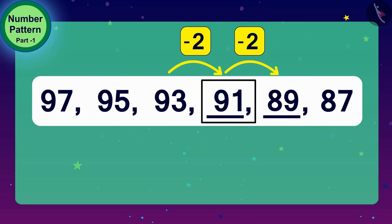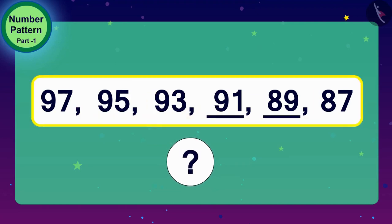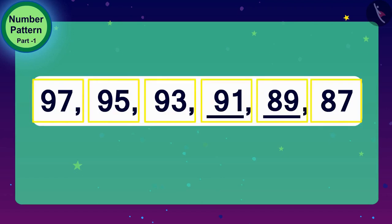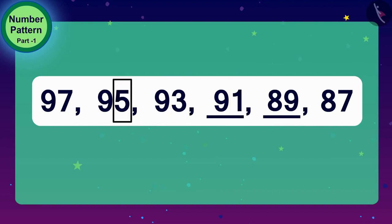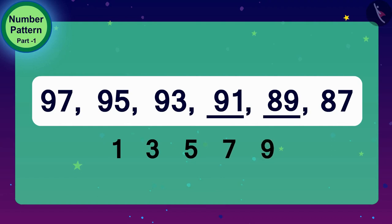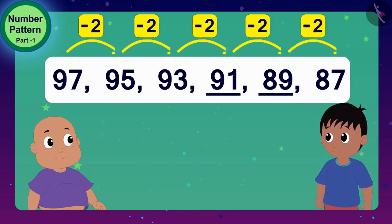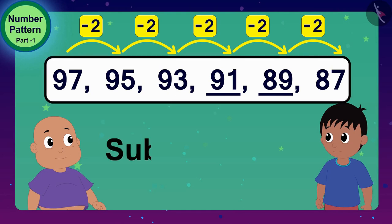In this way, our pattern is completed. Children, do you see something special in this pattern — like the pattern of even numbers? All numbers in this pattern have digits 1, 3, 5, 7, or 9 in the unit place. Such numbers — which have 1, 3, 5, 7, or 9 in the one's place — are called odd numbers. Raju and Bablu completed this number pattern using the subtraction process.